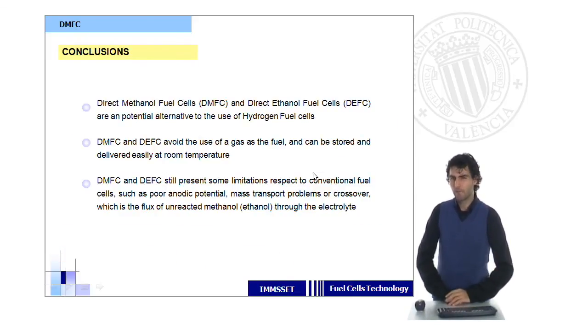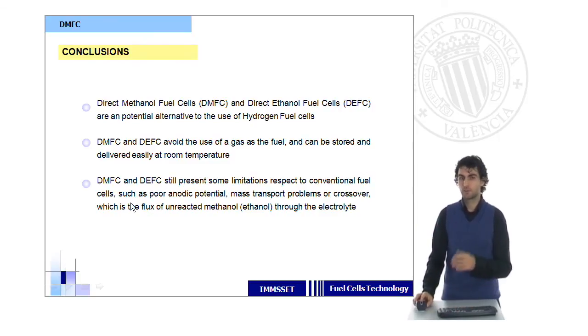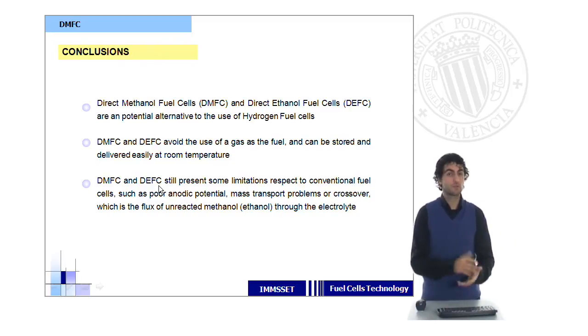In conclusion, these are very interesting fuel cells, potentially good, especially in portable applications, because using methanol or ethanol at the anode will avoid some problems related to the use of hydrogen, which is not bad, but still have a lot of drawbacks, especially related to risks and storage. But DMFC and DEFC, direct methanol and ethanol fuel cells, must still be improved if they want to be competitive with respect to other fuel cells which are already in the market.